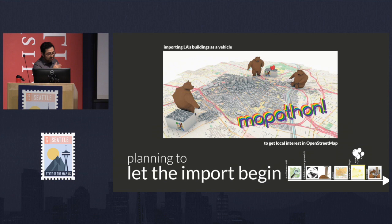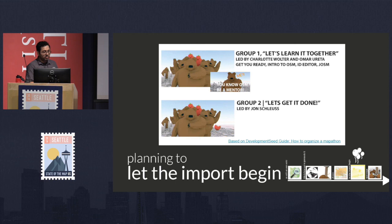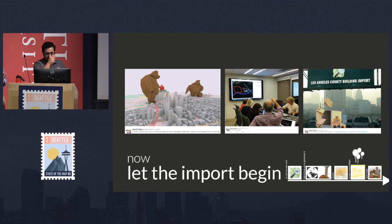We're planning to let the building import begin as a way of engaging and bringing new people into OpenStreetMap — familiarizing them with the platform. The building import is a window of opportunity for bringing people and local interest to OpenStreetMap. We brought in mapathons based on the Development Seed guide for creating a mapathon. We separate into two groups: one for learning together, teaching people how to use ID Editor using LearnOSM techniques, and then getting it done — getting those buildings in there, but making sure they're good.